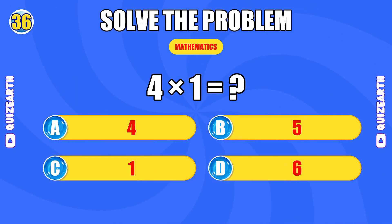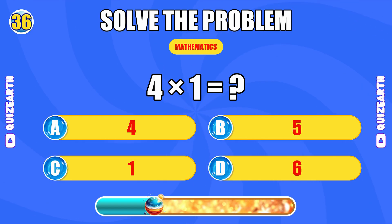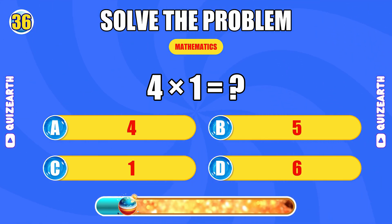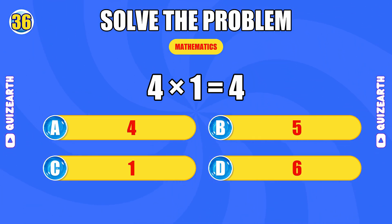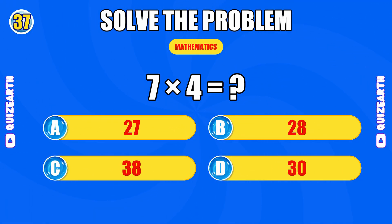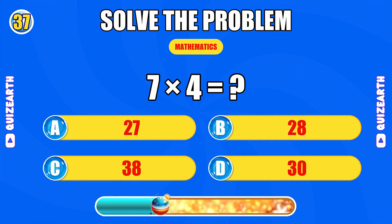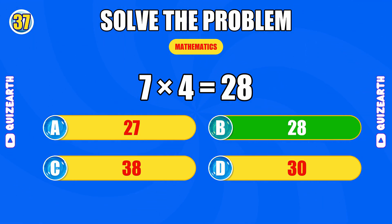What do you get when you multiply four by one? You're on fire — the answer is four. What is seven times four? Magnificent — the answer is 28.